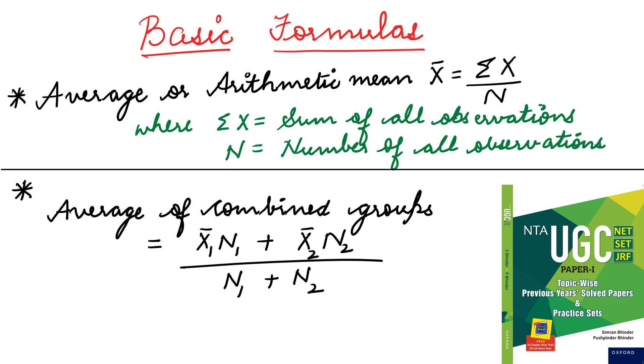Now, in this case, total number of subjects is 3. So, first formula is x bar is equal to summation x upon n. Summation x, it is equal to sum of all observations. n, capital N, stands for number of all observations. This is the basic formula which every student should know.